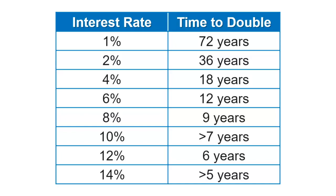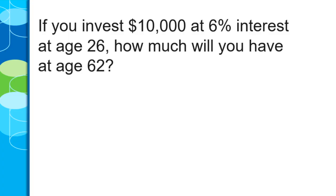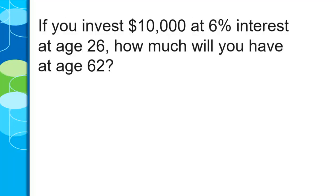Those are some percentages and the amount of time it takes to double your investment. So what? How does that help me figure things out? Let's take a scenario. Pretend that you're 26, and you invest $10,000 at 6% — this is all compounded interest, not simple — at age 26.